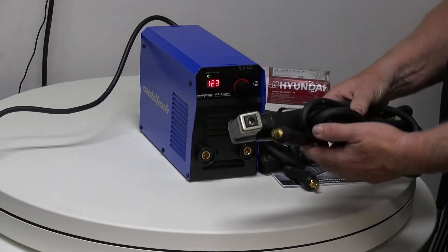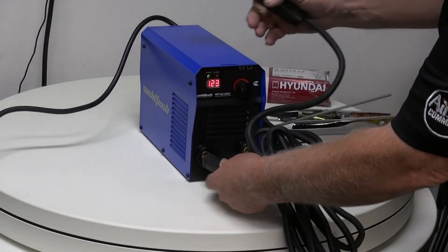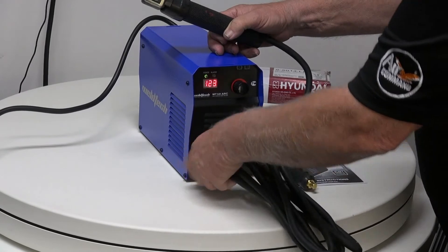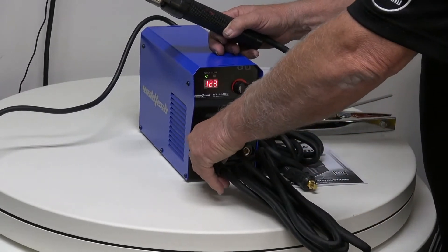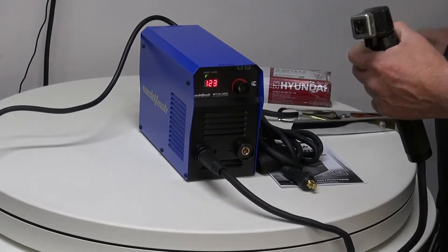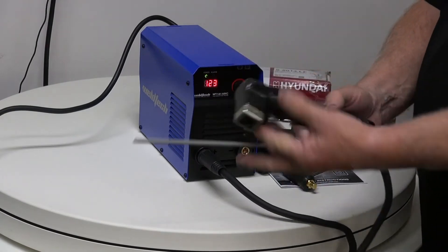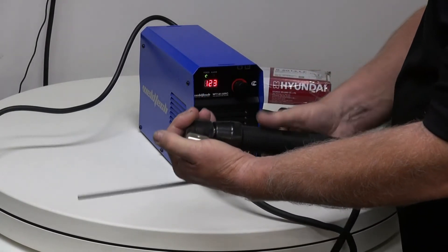So we grab our electrode hand piece. We put it into our little socket here. Make sure it's locked in nice and tight. We get our electrode, and we hold the top of the electrode holder, and we just unwind it.